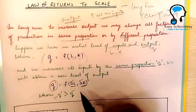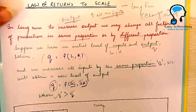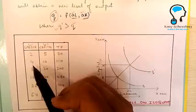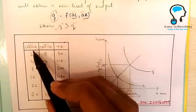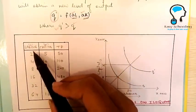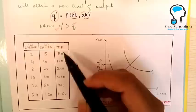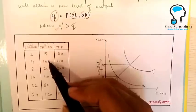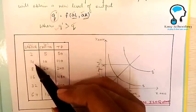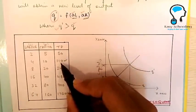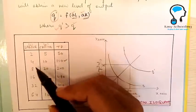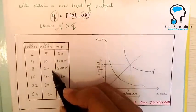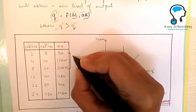There are three stages in the Law of Returns to Scale. Let us understand those stages with the help of a table. We have two inputs: labor and capital. Initially we have used two units of labor and five units of capital, which gives a total product of 50. When we double both the inputs, we see that the change in output is more than the change in input. When we further double the inputs, the proportionate change in output is again more than the proportionate change in input. This stage is referred to as Increasing Returns to Scale.